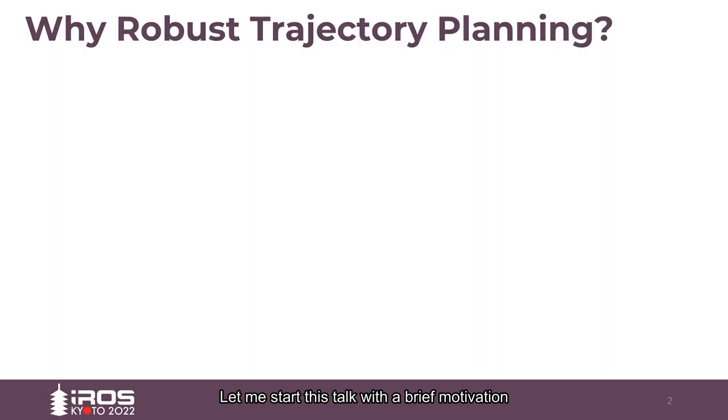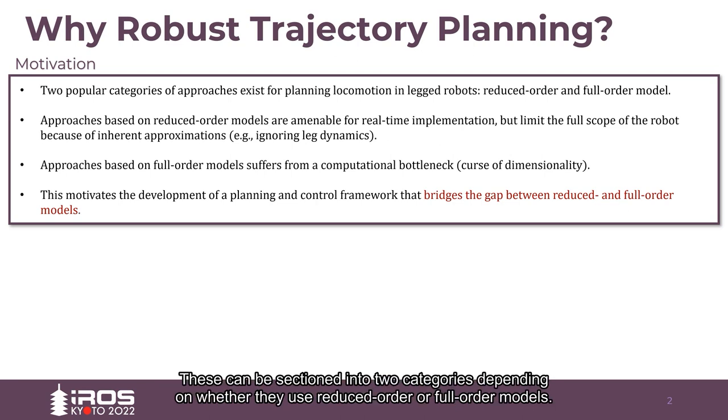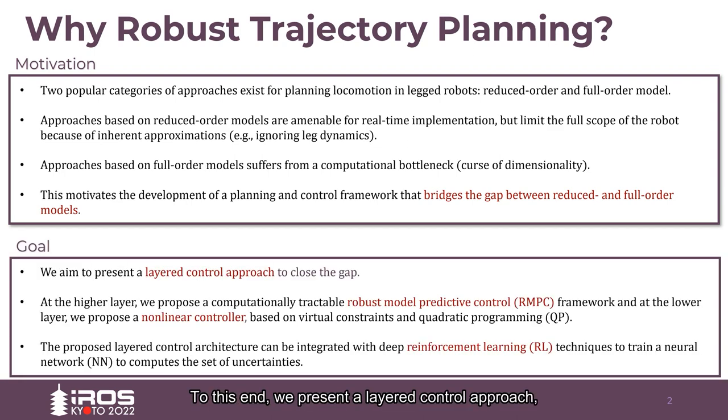Let me start this talk with a brief motivation. Many approaches exist for motion planning of legged robots. These can be sectioned into two categories depending on whether they use reduced order models or full order models. Although reduced order models are simple and amenable for real-time implementation, they limit the full scope of the robot by making approximations. On the other hand, approaches based on full order models suffer from computational bottlenecks. To resolve these issues, we propose a planning and control framework that bridges the gap between reduced and full order models.